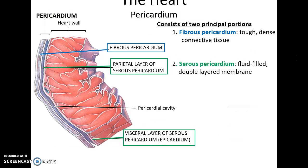The pericardium consists of a fibrous outer pericardium that's made of dense, tough connective tissue. Under that is a serous pericardium, a double-layered membrane structure with a little bit of fluid in between the two layers, with the parietal layer lying next to the fibrous pericardium, and the visceral layer lying against the heart itself.